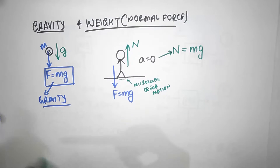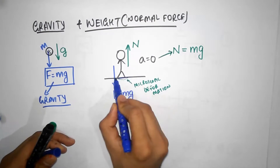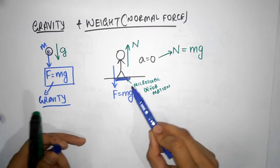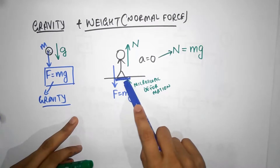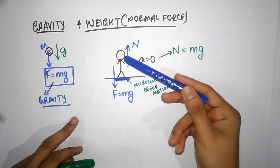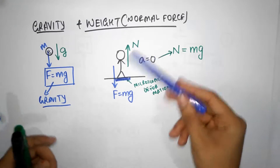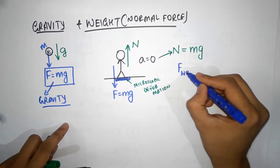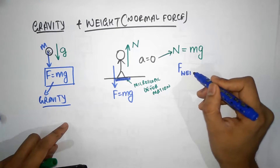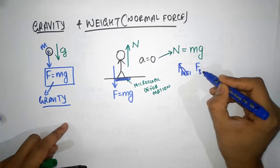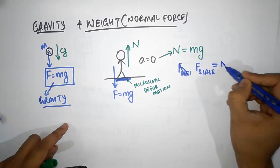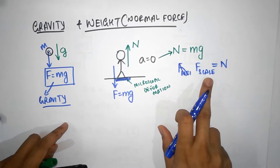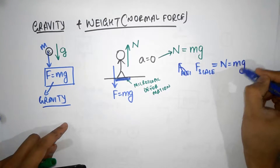Now, if you are standing on a weighing scale, it will be the weighing scale that pushes you up. Therefore, you are going to push the weighing scale down with the same force. The force on the weighing scale will also be N in magnitude — action equals minus reaction. This is the action force, this is the reaction force, and therefore it should also be equal to mg.